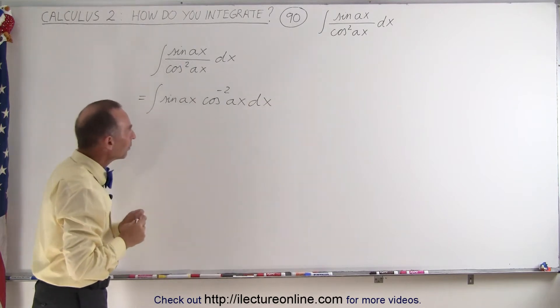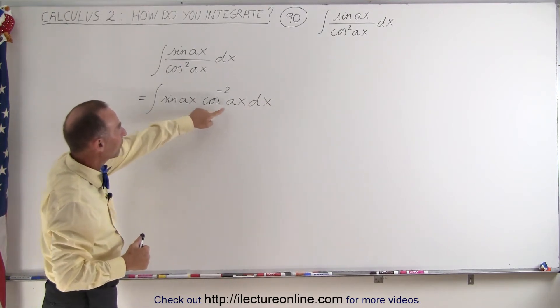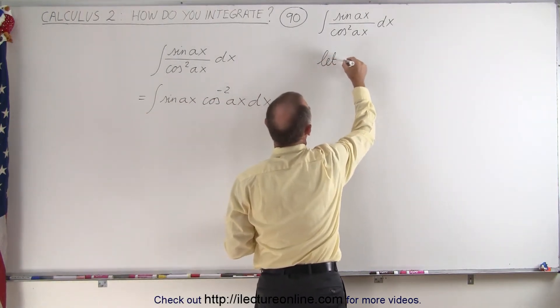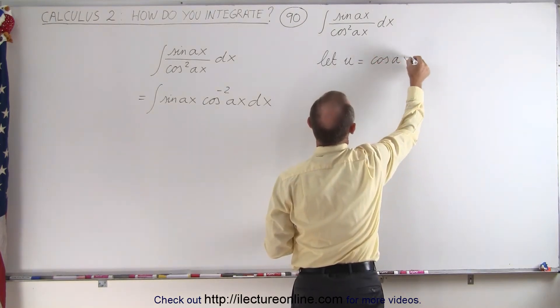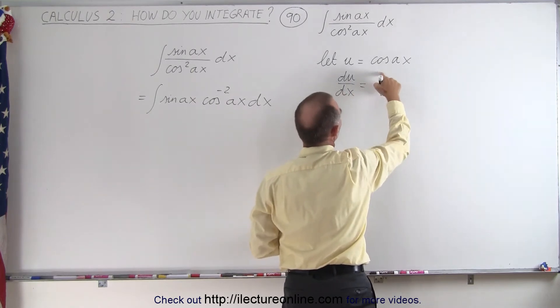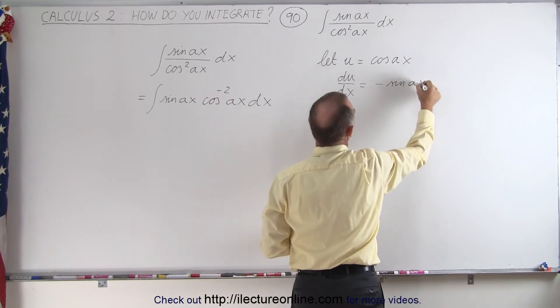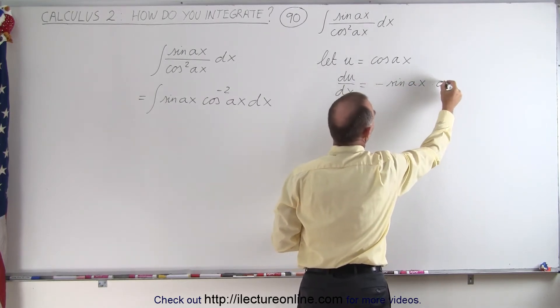So now that we've done that we can do a similar substitution as before. We can let the cosine of Ax be equal to u. So we're going to let u equal the cosine of Ax. That means that du dx, the derivative of that with respect to x, is going to be equal to the negative sine of Ax times the derivative of the angle which is times a.